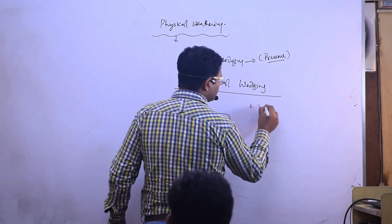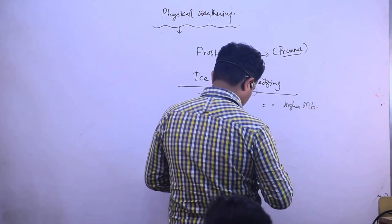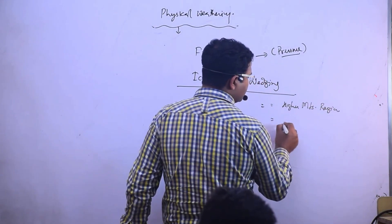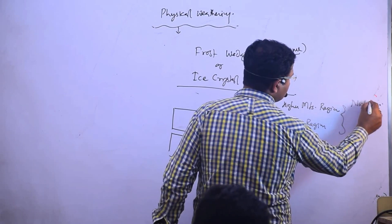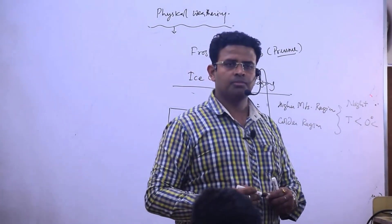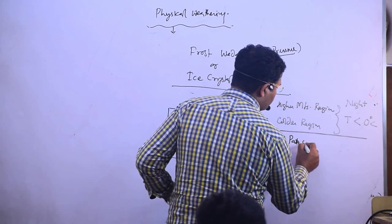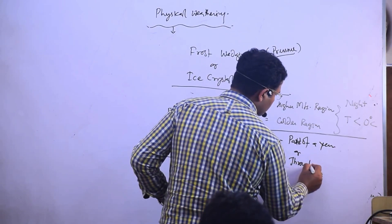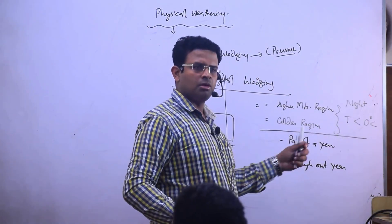Higher mountainous region, second, colder region where in the night temperature becomes less than 0 degree Celsius. Where the night temperature becomes less than zero for part of a year, for 2 months or 3 months, or throughout the year.